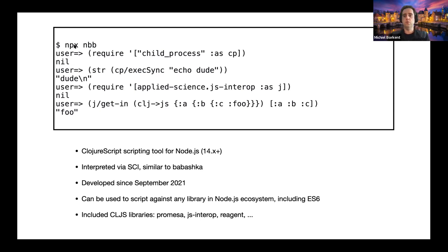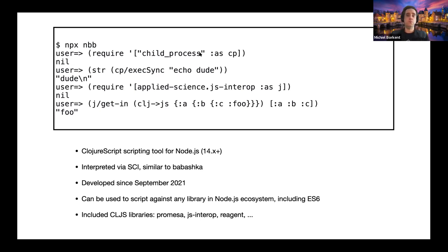If you type `npx` — a tool to launch any npm dependency as a command line tool — and if you don't have NBB installed, it will install it on demand. You'll be dropped into a REPL where you can start typing expressions. Here we type require with child_process, which is a built-in Node.js library for launching child processes, and we launch a process calling echo. You can see the output, and we also require one of the built-in ClojureScript libraries.